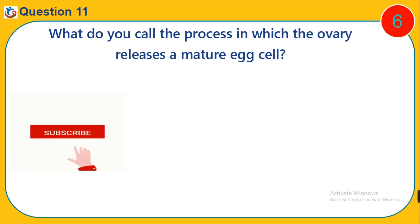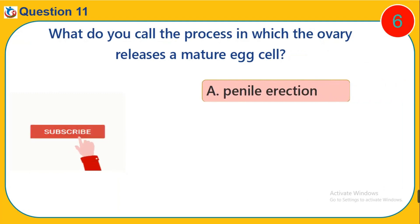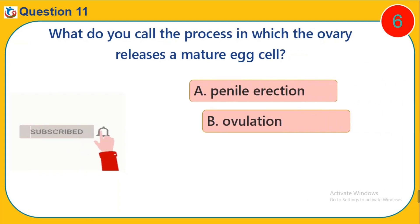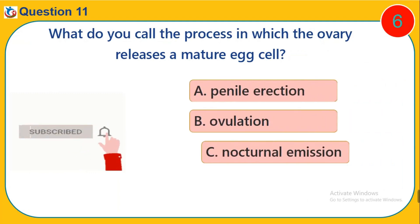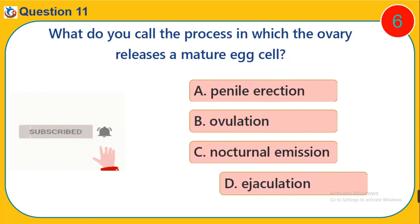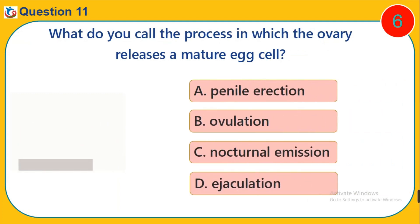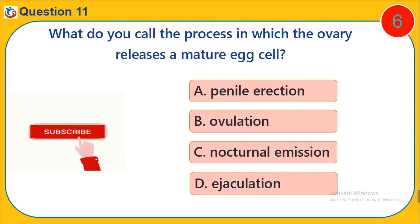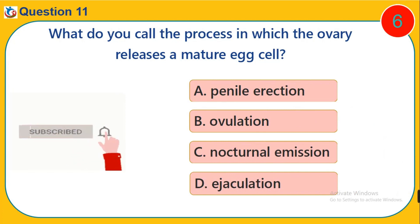Question 11. What do you call the process in which the ovary releases a mature egg cell? A. Penile erection. B. Ovulation. C. Nocturnal emission. D. Ejaculation.